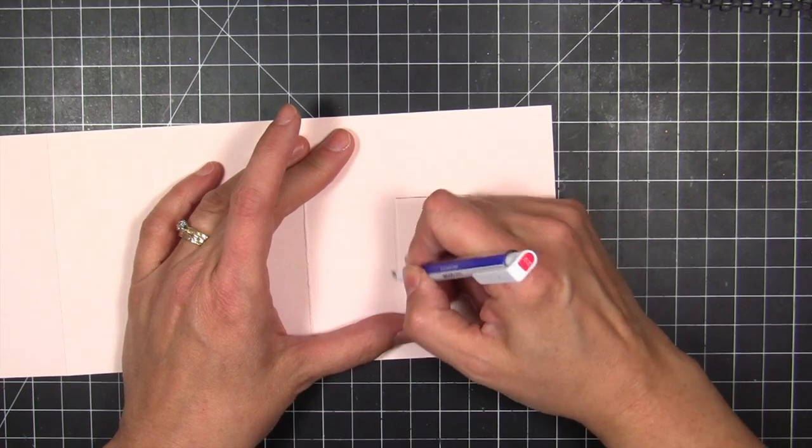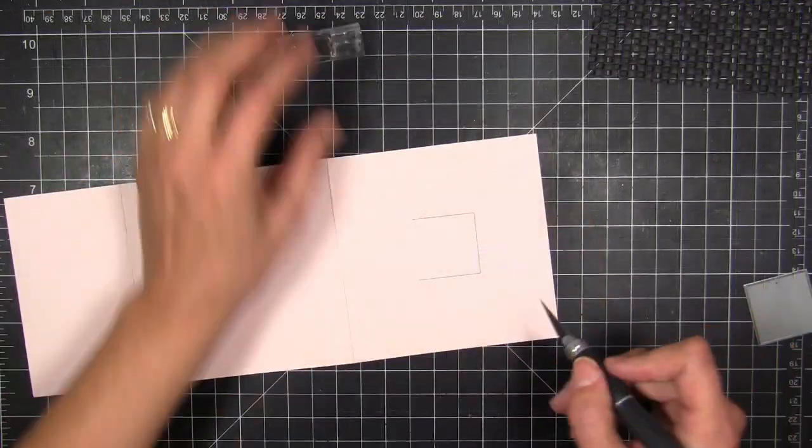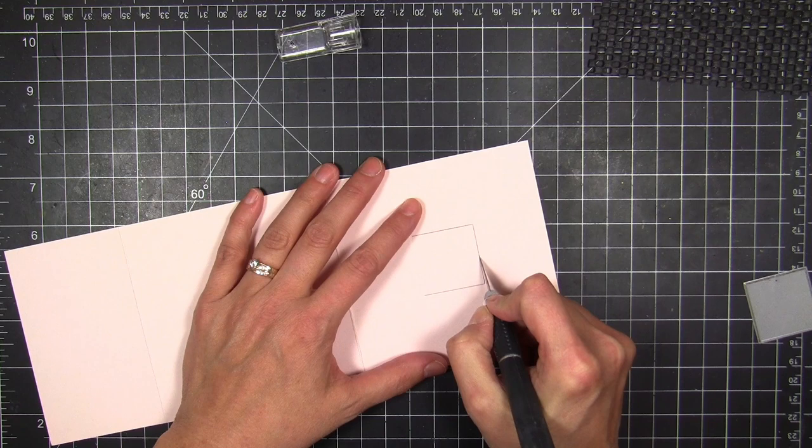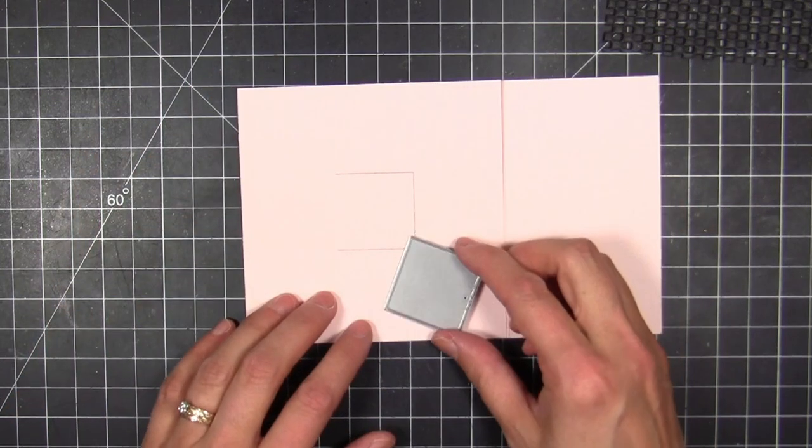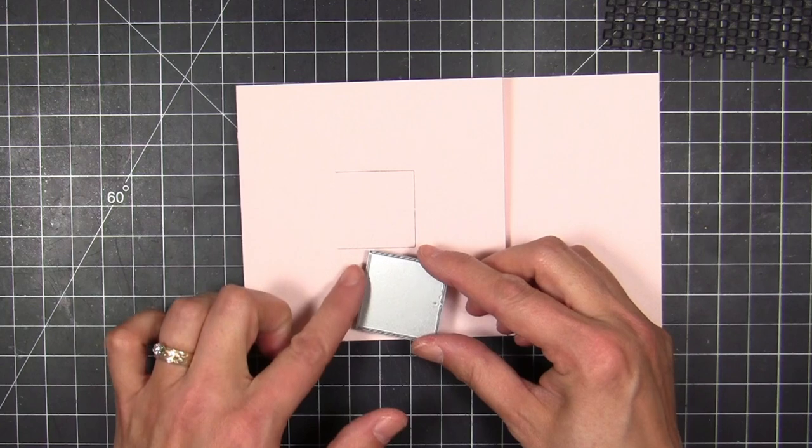So I'm going to erase my pencil line now because I don't want it to show on the front of my card. I'm going to cut the notch that holds that little door shut because I do want it to be free moving.